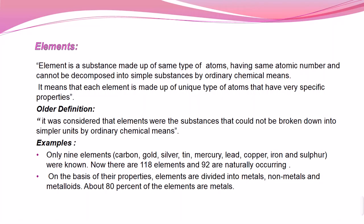Let's start with elements. Elements were considered in the early days as tiny, small substances that can't be divided. The modern definition is: an element is a type of substance made up of atoms having the same atomic number, and can't be divided or decomposed into simpler components by ordinary chemical means.